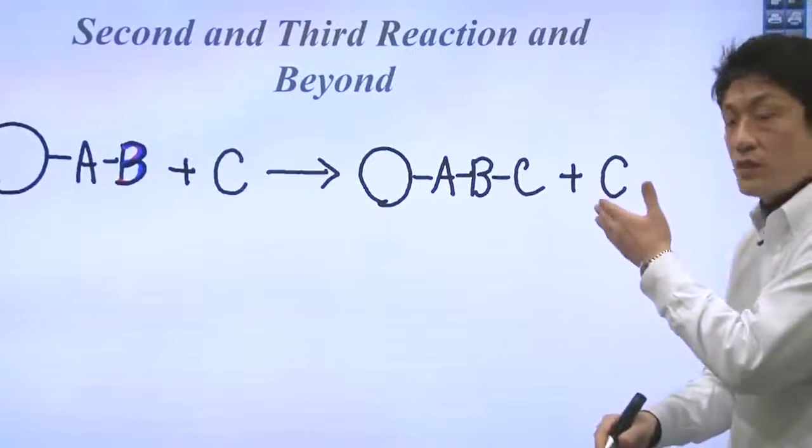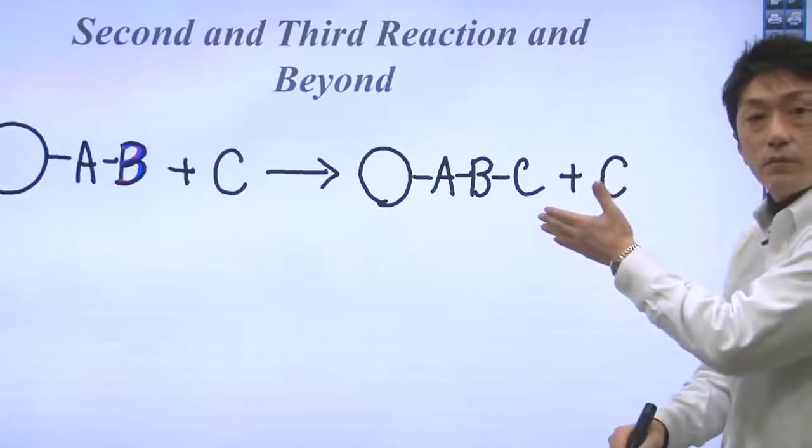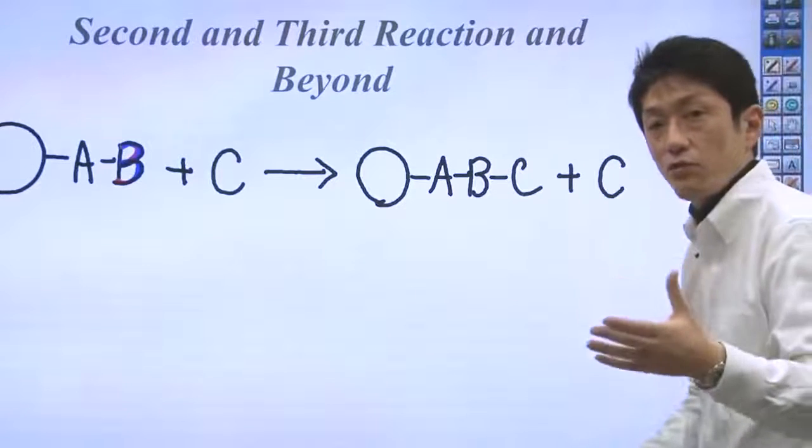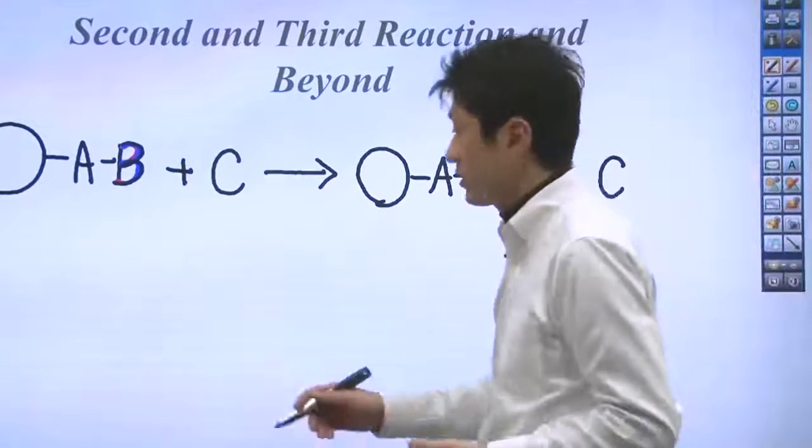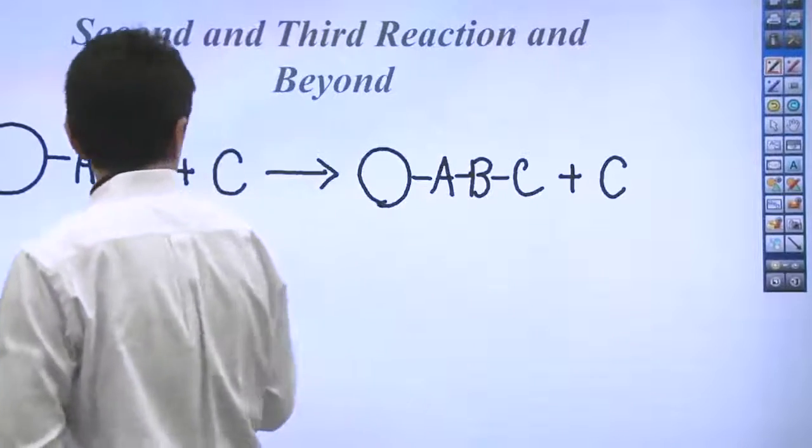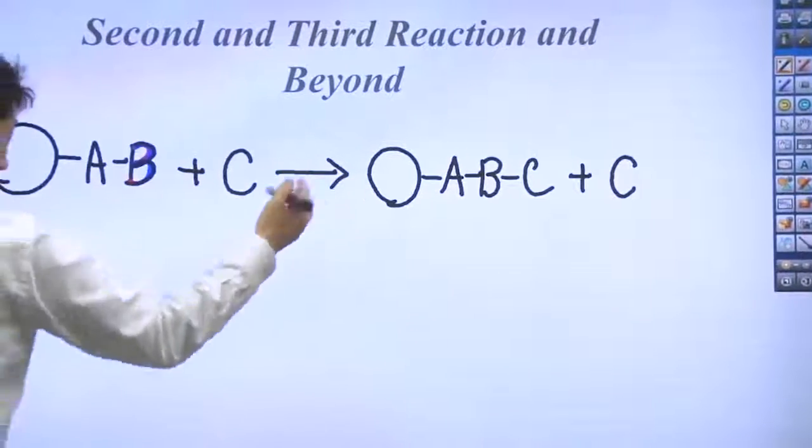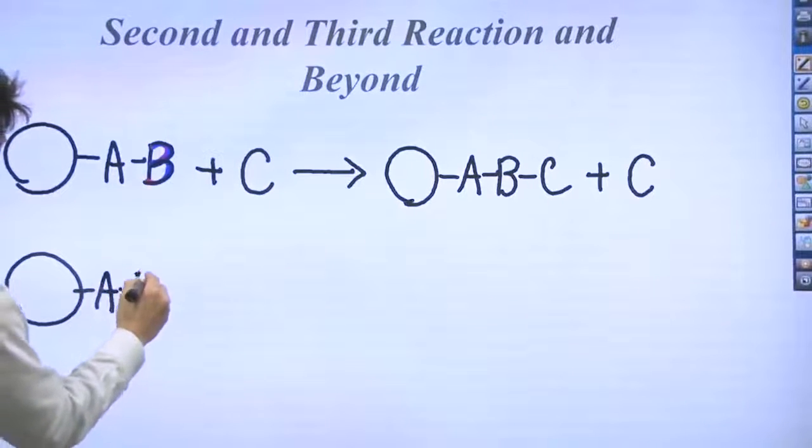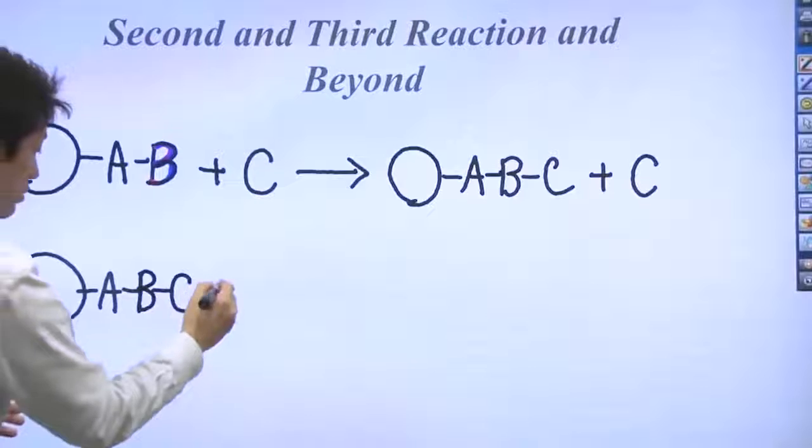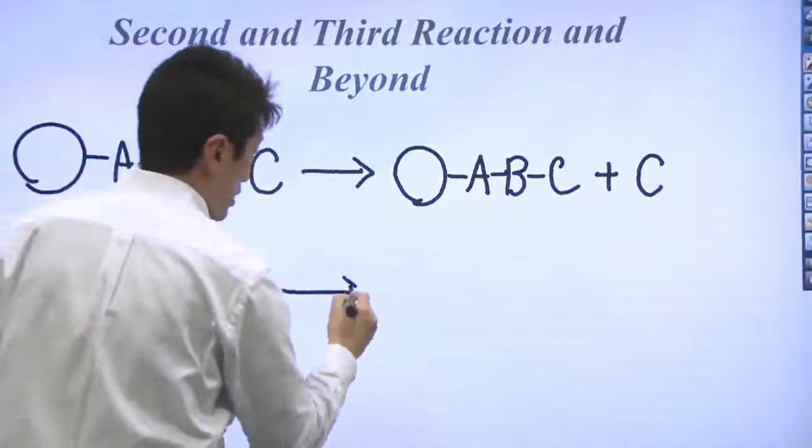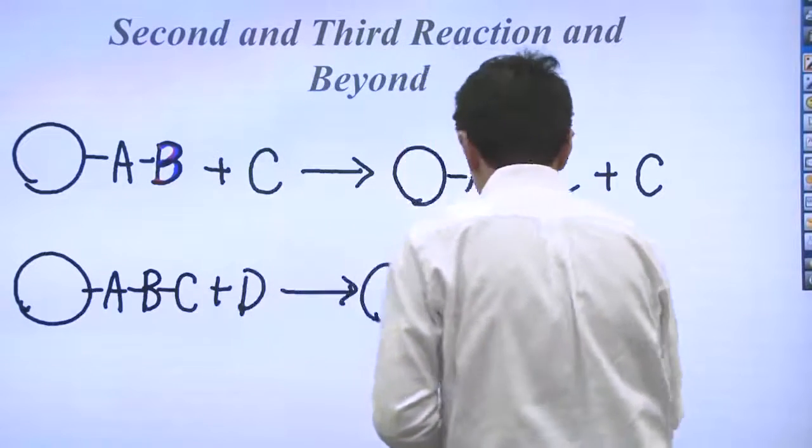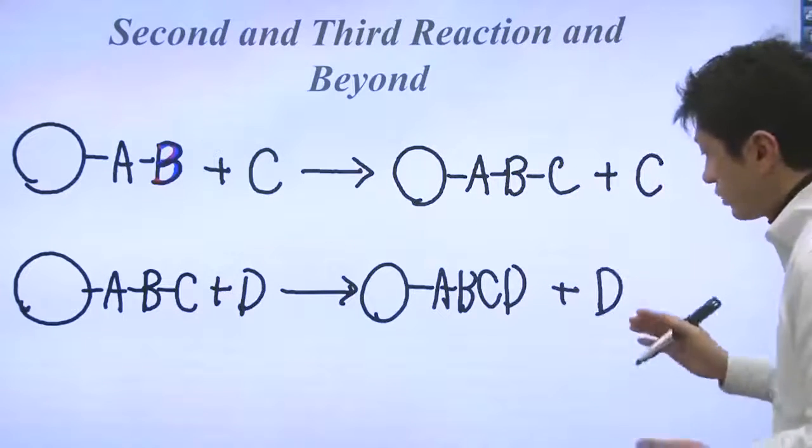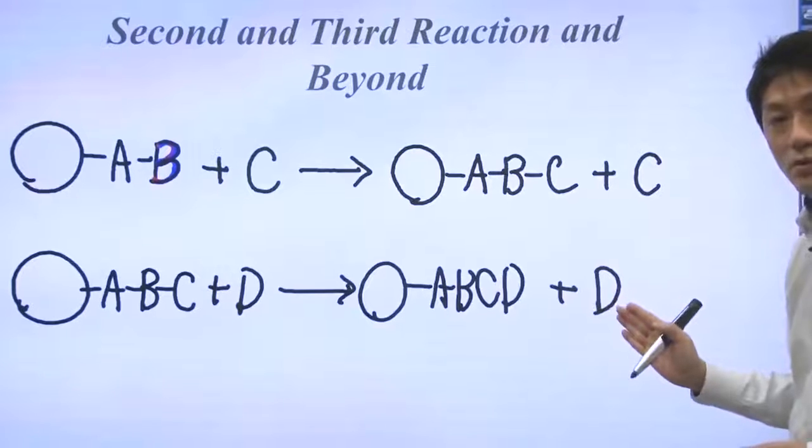Once the non-reactive C is rinsed out using the size difference, you can start the third reaction by adding the excess amount of D. You can purify that. Now you have ABC on the large beads. You add the excess amount of D, then you'll get ABCD on the large beads, plus excess amount of D. You can rinse out the excess amount of D.